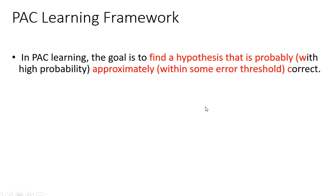So basically, the PAC learning framework, the goal here is to find a hypothesis that is probably approximately correct. That's why it's called PAC: Probably Approximately Correct.